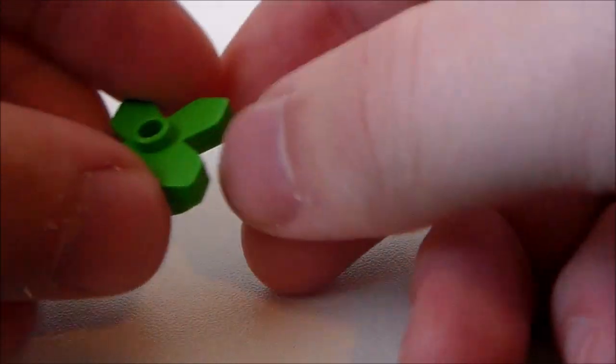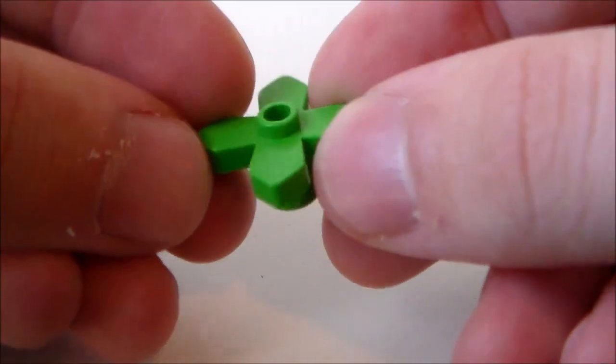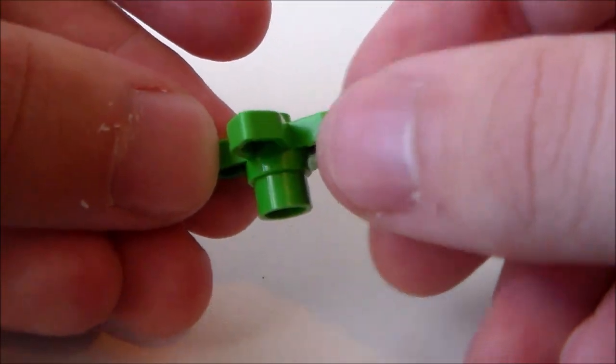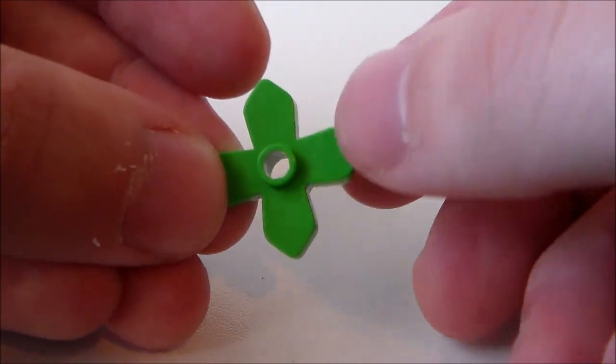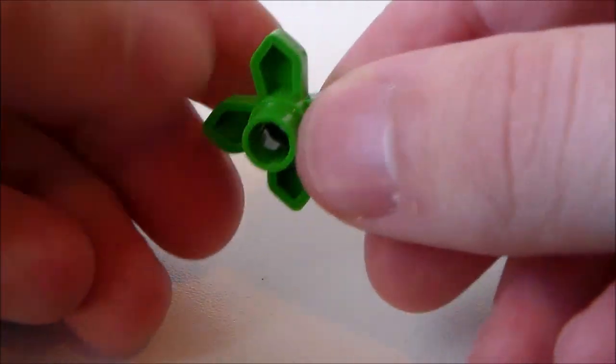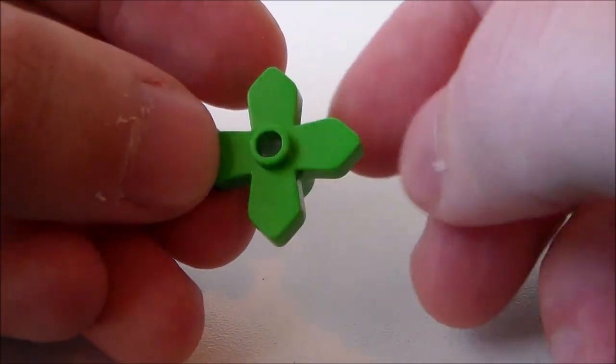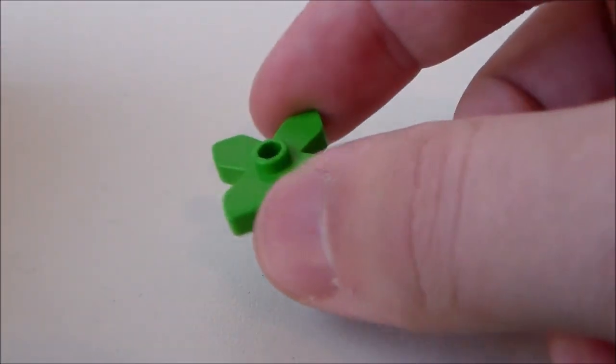So the first piece that I'm going to get for the Pitcher Plant is going to be one of these green flower bricks. So this will be the base that I put everything onto, and you can get a lot of these from just the regular LEGO Minecraft sets.